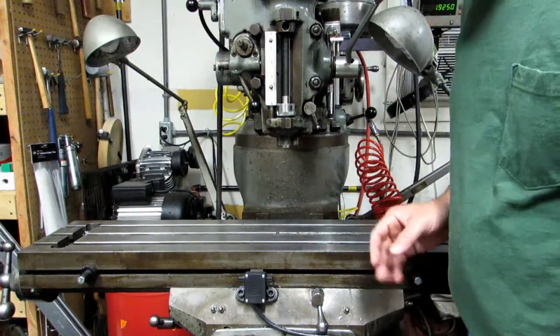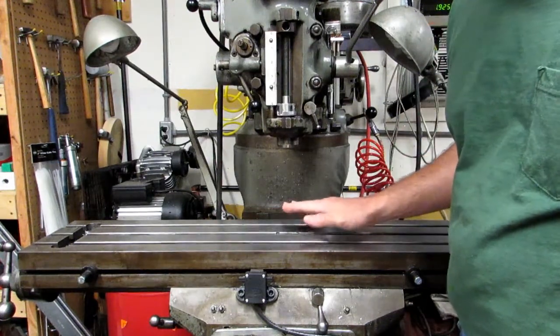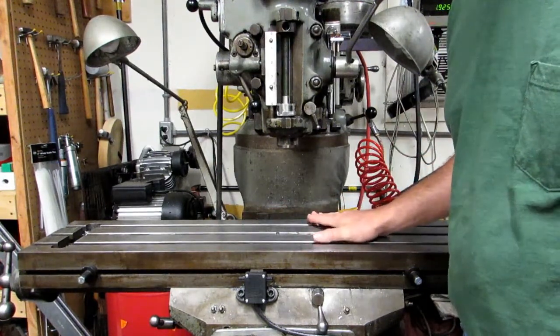The very first thing you want to do is make sure that the table is clean. You don't want any chips or burrs on the table. Those are the two enemies of the machinist.